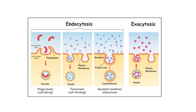Exocytosis and endocytosis are important in regulating the composition of the cell's internal environment and interacting with the external environment. These processes enable cells to communicate with neighboring cells, respond to environmental cues, and adapt to changing conditions. Both exocytosis and endocytosis are types of active transport, as they require energy in the form of ATP.